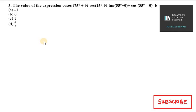We are given with one expression: cosec(75° + θ) · sec(15° - θ) · tan(55° + θ) · cot(35° - θ).